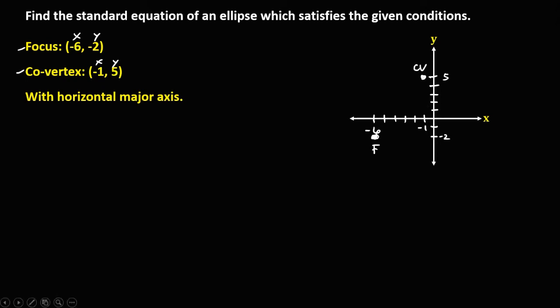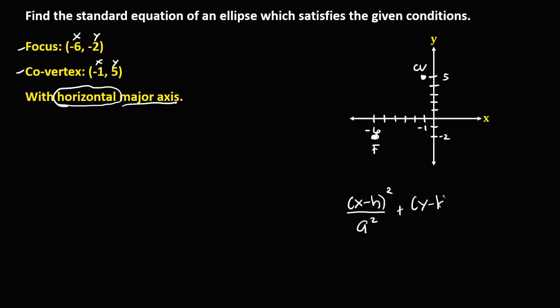Since the major axis of this ellipse is in horizontal position, this is a horizontal ellipse. The formula for a horizontal ellipse is: (x minus h) squared over a squared, plus (y minus k) squared over b squared, equals 1. Since it's horizontal, a squared is the denominator of x squared.